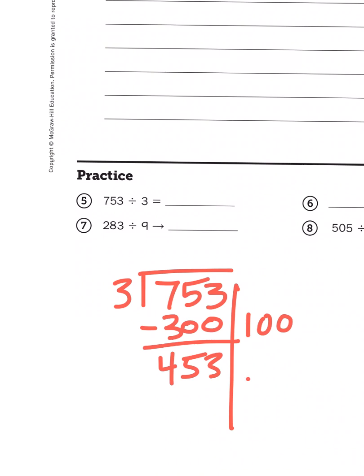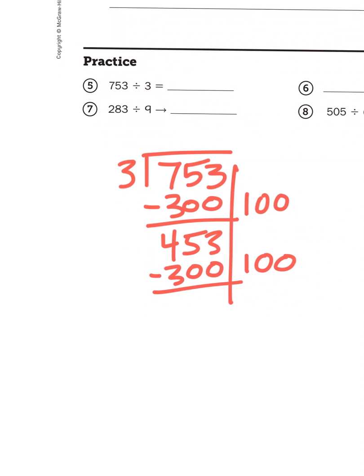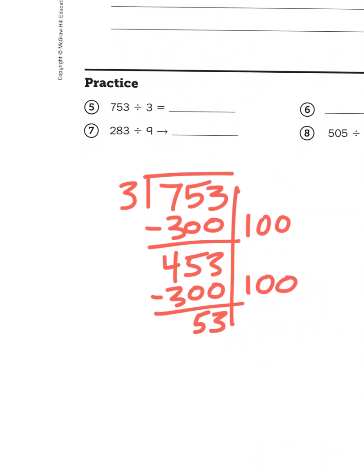So I know my quotient's going to be at least 200, because 100 plus 100 is 200. I'm going to subtract again. Now I have 153.